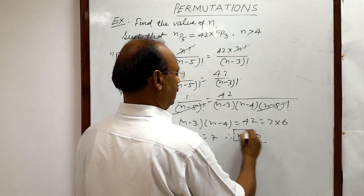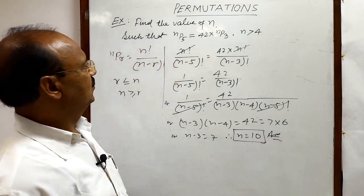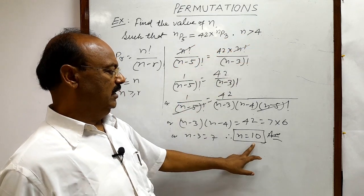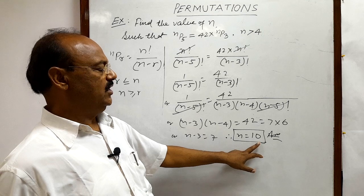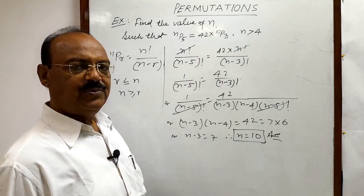This is equal to 10. So, this is the answer. Value of N is 10 here. And the condition N should be greater than 4 is being fulfilled here. Because value of N is 10 which is greater than 4. So, in this way, we can solve the problems very easily.